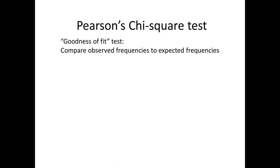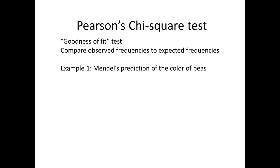Pearson's Chi-Square Test is often called a goodness-of-fit test. It compares observed frequencies to expected frequencies. So let's look at an application. Back in the 1800s, the good monk Gregor Mendel studied transmission of characteristics from one generation to the next, and he used peas to study this.